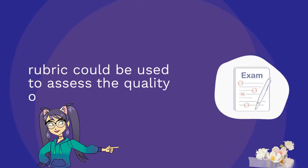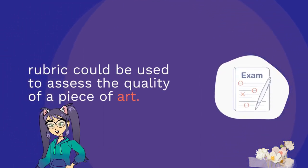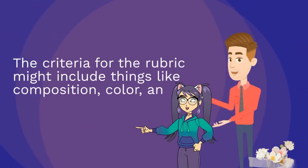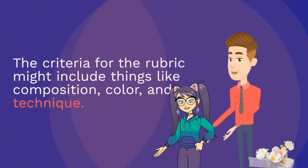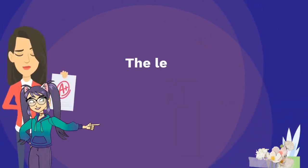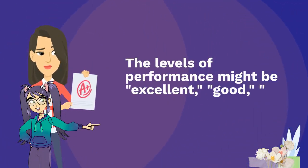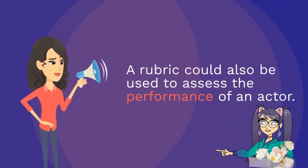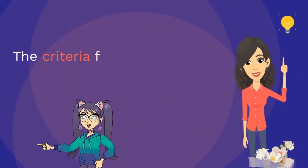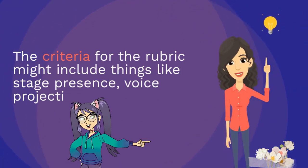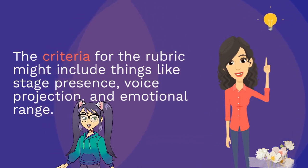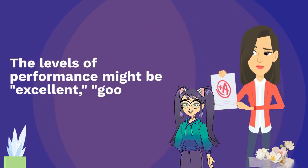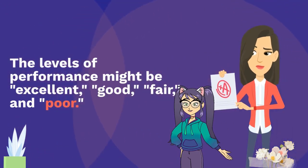In the arts, a rubric could be used to assess a visual artwork. The criteria might include things like composition, color, and technique, with performance levels of excellent, good, fair, and poor. A rubric could also be used to assess the performance of an actor. The criteria might include things like stage presence, voice projection, and emotional range, with levels of excellent, good, fair, and poor.